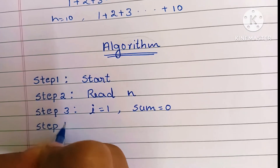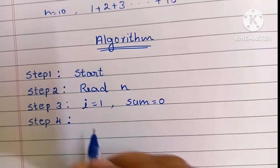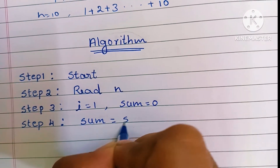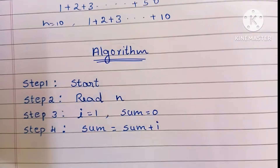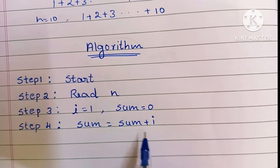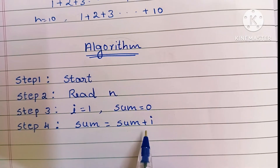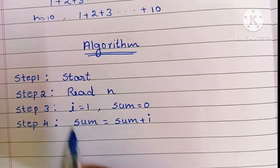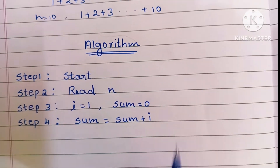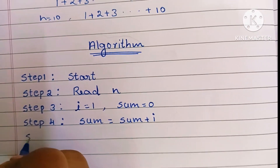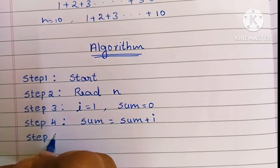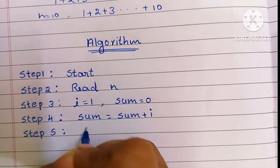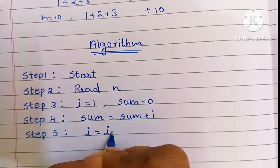In Step 4, we have to start the process: sum is equal to sum plus i. Initially sum is equal to 0 and i is equal to 1, so we add 0 plus 1 and the sum value becomes 1. In Step 5, each time we have to increase the value of i — that is, i is equal to i plus 1.